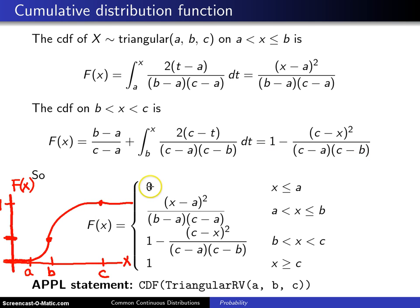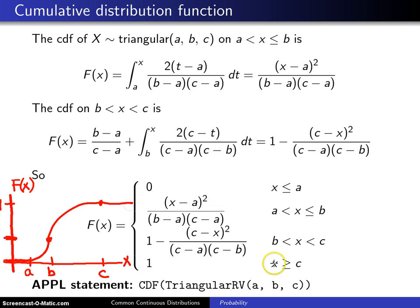Putting the pieces together, the CDF is 0 to the left of a. It is this quantity between a and b. It is this quantity between b and c, and it looks like that. And finally, it is 1 to the right of c. This all can be done in one APPLE statement: CDF of triangular with arguments r, v, a, b, and c, and that will run through all the calculus.